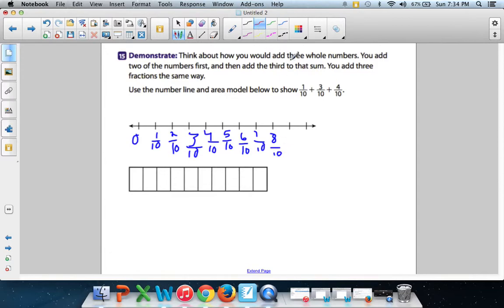So let's start with 1/10, which is right there. Now it says to add 3/10, let's add 3/10. Let's go one, two, three. And then it says to add 4/10, let's do that. One, two, three, four. And where do we end? We end at 8/10. So we know that 1/10 + 3/10 + 4/10 equals eight tenths.